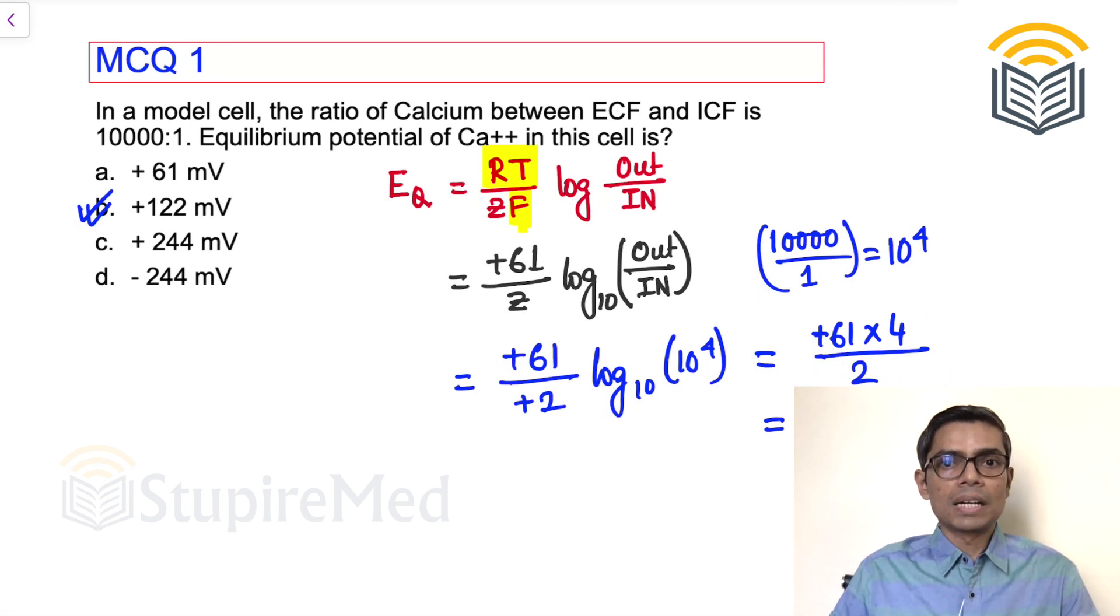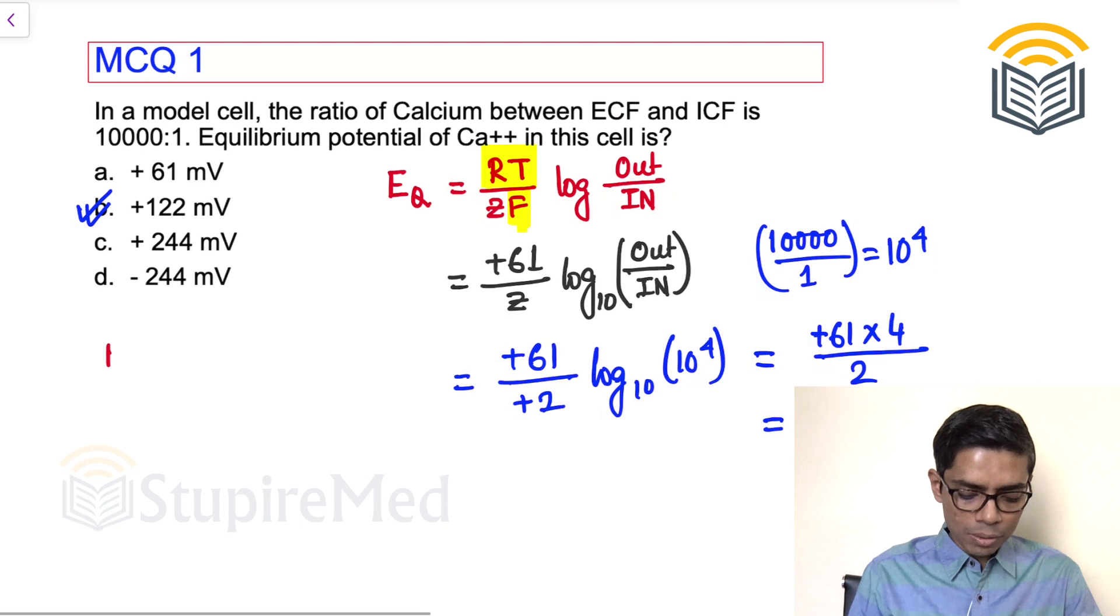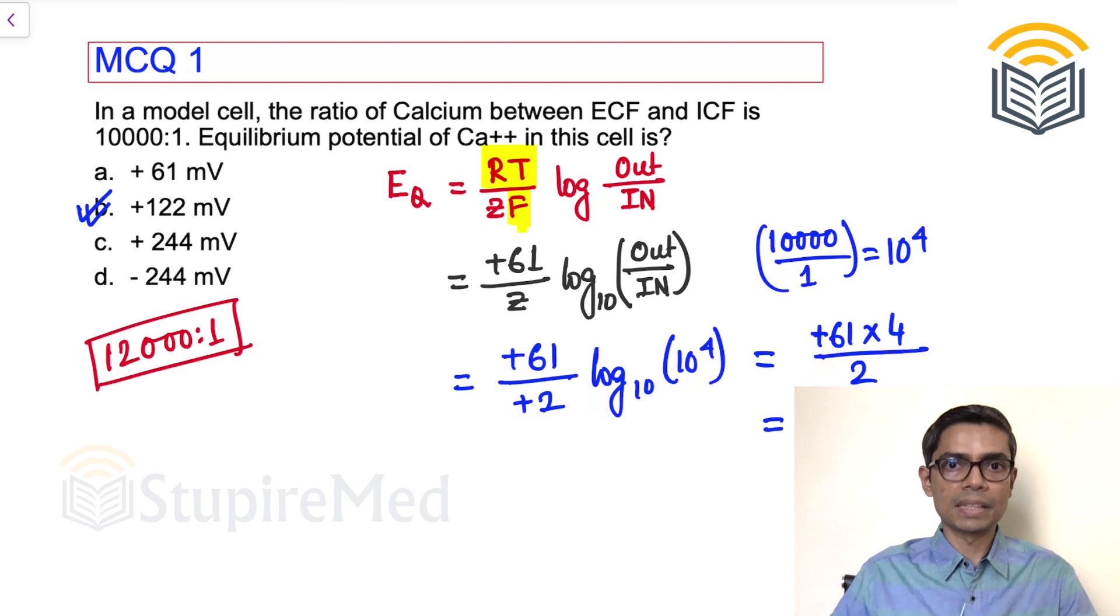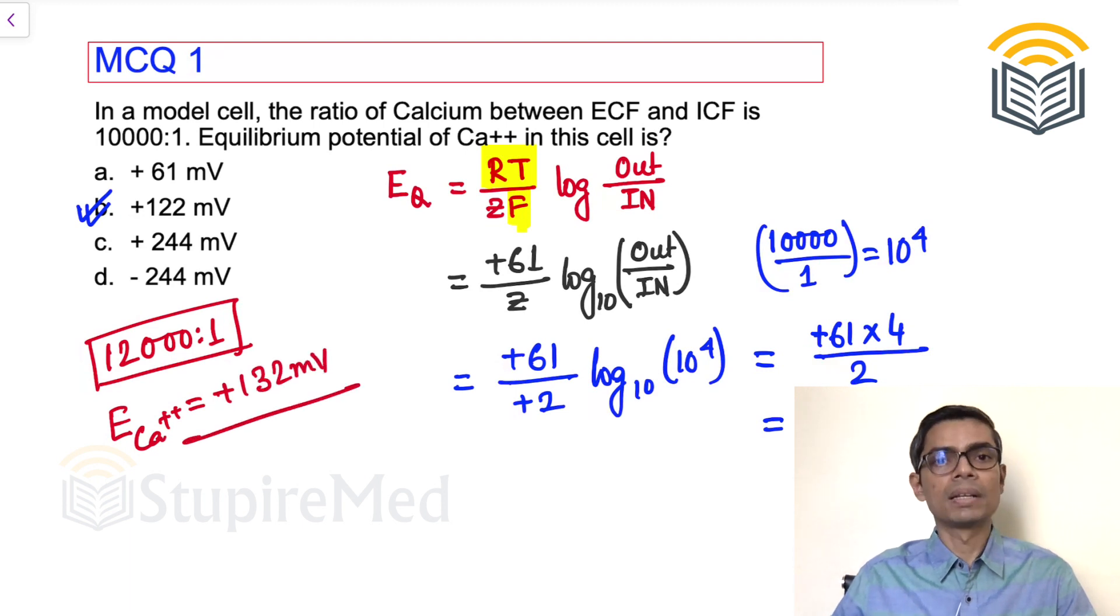So the first question answer: what is the equilibrium potential of calcium in this cell is plus 122 millivolt. You know that normal ratio between ECF and ICF calcium is 12000 is to 1. This is the normal ratio, but in this question, although it is given 10000 is to 1, actual ratio is 12000 is to 1, and that is why the equilibrium potential of calcium in a mammalian cell is plus 132 millivolt. This is the normal equilibrium potential in a mammalian cell.